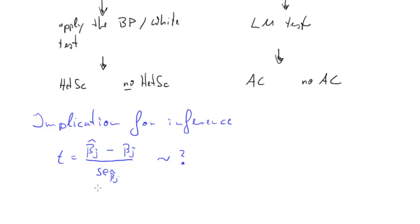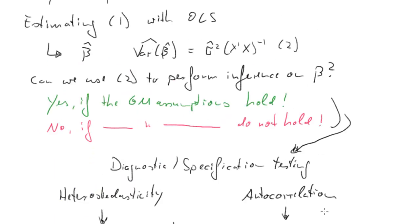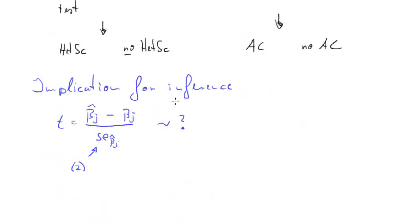This standard error here can come from three sources. This can either come from equation 2, recall that was our standard formula for the variance-covariance matrix of beta hat, or it can be calculated as White standard errors or as Newey-West standard errors.